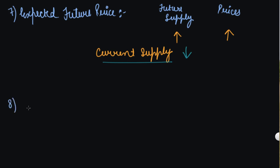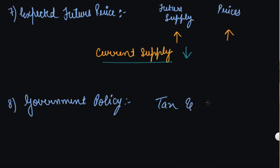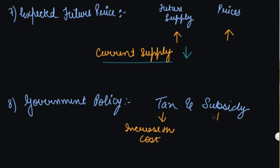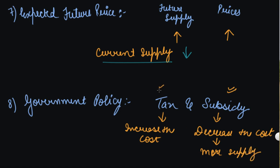The eighth is government policy. The taxation and subsidy policy of the government affects market supply of a commodity. Tax increases the cost, whereas a subsidy decreases the cost. If a subsidy is given, the cost decreases, so you will supply more. If taxes increase, this raises cost, so you will supply a lower quantity. This is how government policy affects your quantity supplied.